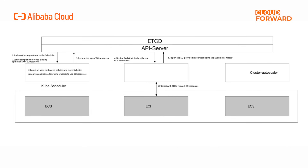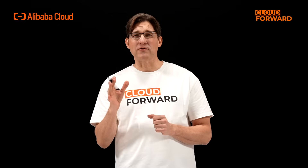First, let's explore ACK's ability to provide mixed scheduling for different elastic resources. ACK Scheduler can elastically schedule ECS and ECI resources, supporting custom scheduling policies. When ECS resources are insufficient, ECI elastic resources can compensate. Moreover, it supports custom ECS and ECI resource scheduling ratios, priorities, and more, enabling applications to implement a unified scheduling architecture for fixed resources plus elastic resources.